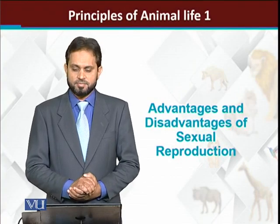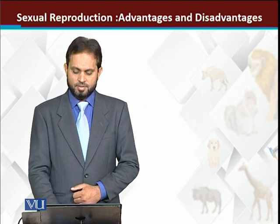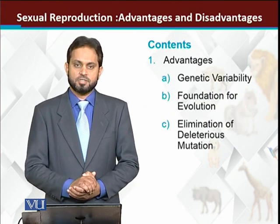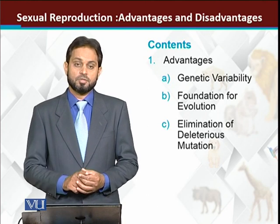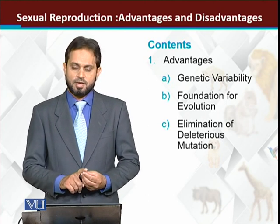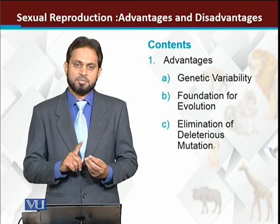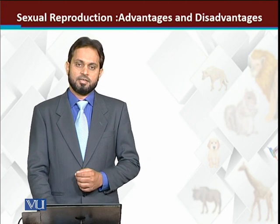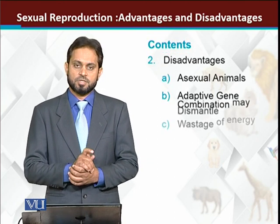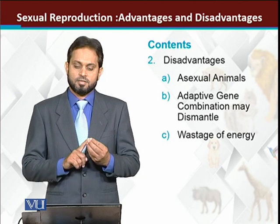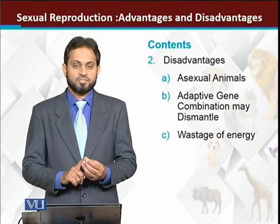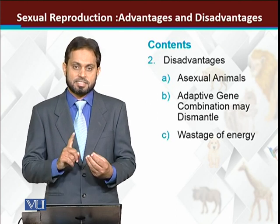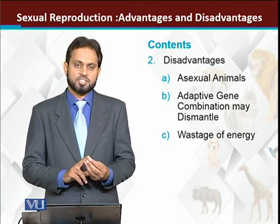Advantages and disadvantages of sexual reproduction. First, the contents: advantages of sexual reproduction — number one genetic variability, number two foundation for evolution, and number three elimination of deleterious traits or deleterious mutations. Disadvantages: number one asexual animals cannot survive if there is only sexual reproduction, number two adaptive gene combinations will dismantle, and number three wastage of energy.